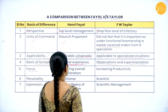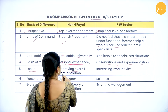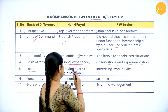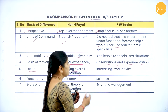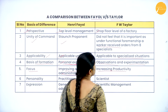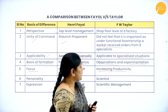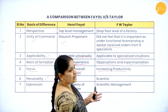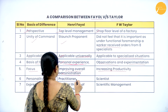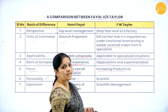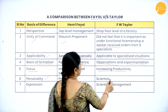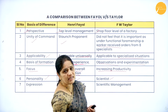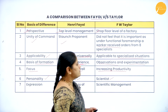In terms of focus: Henry Fayol focused on improving the overall administration of the company at all levels. F.W. Taylor focused mainly on increasing the productivity of the organization. Regarding personality: Henry Fayol was a practitioner who practiced what he preached, whereas F.W. Taylor was a scientist who coined the term 'scientific management' through his scientific method of thinking.